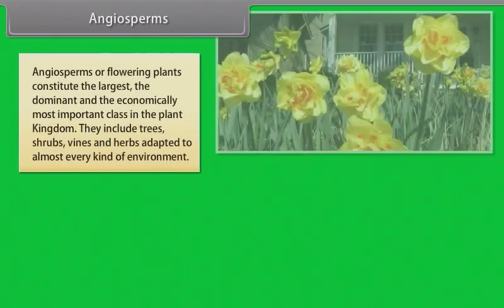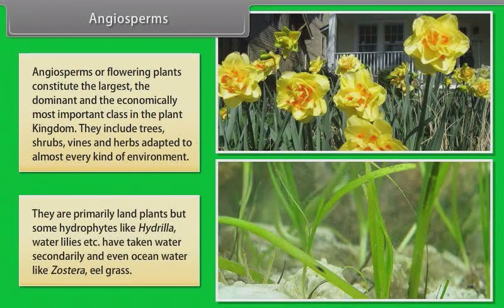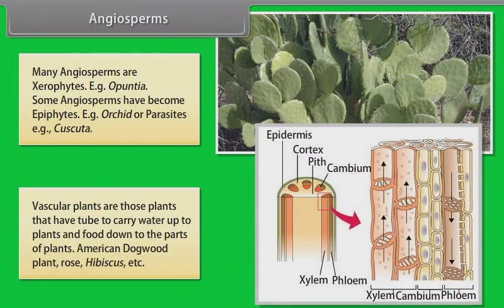Angiosperms: Angiosperms or flowering plants constitute the largest, the dominant and the economically most important class in the plant kingdom. They include trees, shrubs, vines and herbs adapted to almost every kind of environment. They are primarily land plants, but some hydrophytes like Hydrilla, water lilies have taken to water secondarily, and even ocean water like Zostera eel grass. Many Angiosperms are xerophytes like Opuntia. Some Angiosperms have become epiphytes like orchids or parasites like Cuscuta. Vascular plants are those plants that have tubes to carry water up to plants and food down to the parts of plants, like American dogwood, rose, hibiscus.